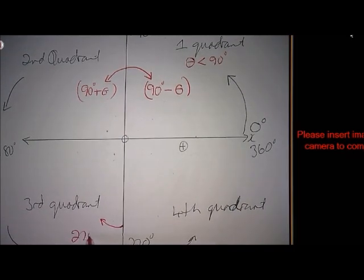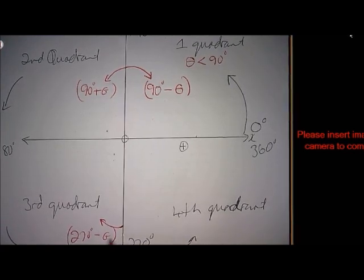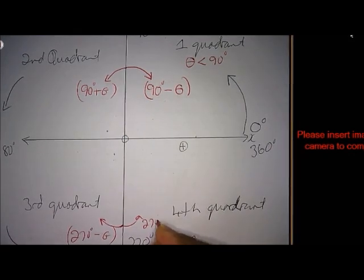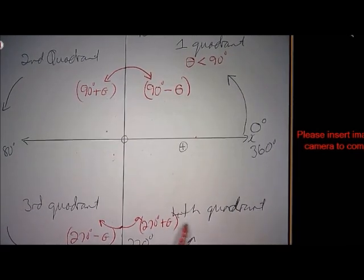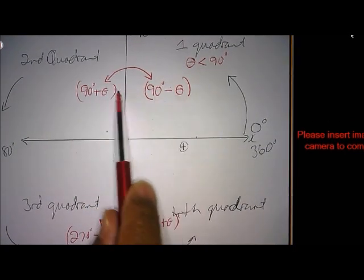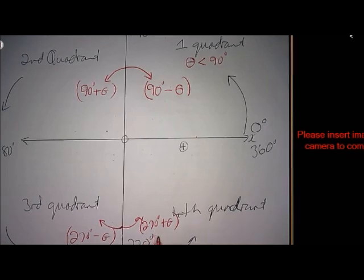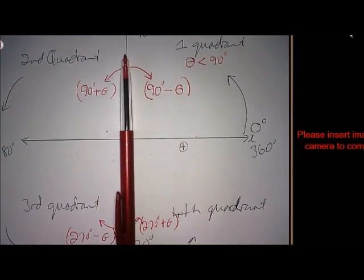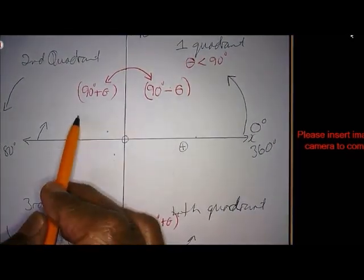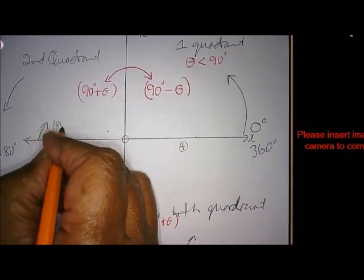We also have 270 minus theta to stay in the third quadrant, and 270 plus theta for the fourth quadrant. Those are the four angles from the y-axis. Then secondly, moving from 180, we can also say 180 minus theta for the second quadrant.